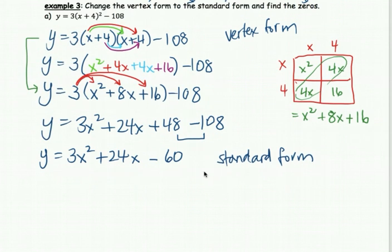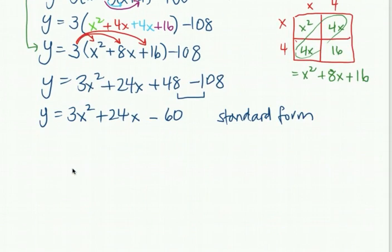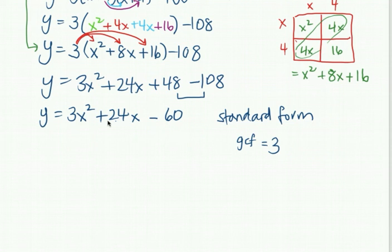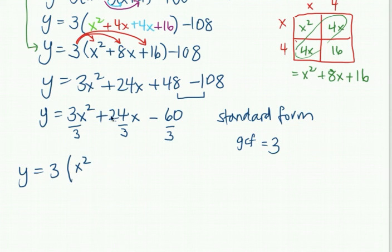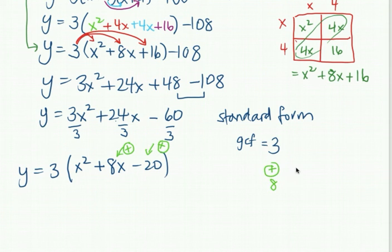Now that we got from vertex to standard form, let's find the zeros. When you see it in standard form, you have to factor it. Step 1: GCF. Look at the smallest number — 3. It can divide into 24 and into 60. No letters. So GCF is 3. Dividing: 3 divided by 3 gives x squared; 24 divided by 3 is 8x; 60 divided by 3 is negative 20. So we have 3 times (x squared plus 8x minus 20). Set up the product-sum table: we need to add to positive 8 and multiply to negative 20.